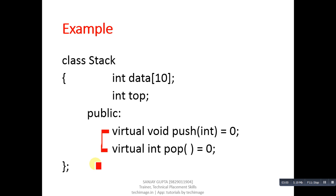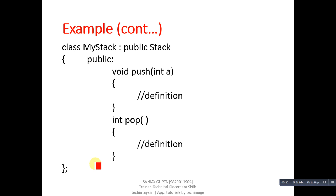You don't have to decide the name of the function, the parameter list, or the return type. You just have to inherit this class and implement the definitions of the functions. You can see here the Stack class is inherited into MyStack class, and in MyStack class you just have to fill in the blocks — one for the push function and one for pop.